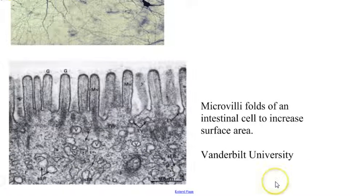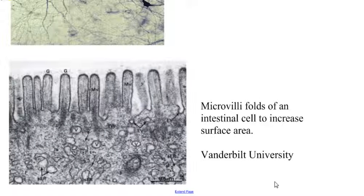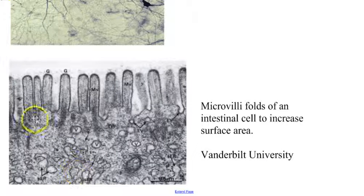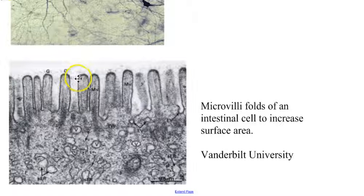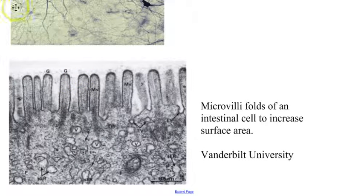The other thing a cell can do is be highly folded. When we were germinating plant seeds, we saw root hairs which increase surface area. Here's a photo from Vanderbilt University showing the microvilli folds of an intestinal cell — probably from a rat. You can see the cell is really folded because this is where absorption of nutrients occurs. This allows cells to be larger than you would expect.